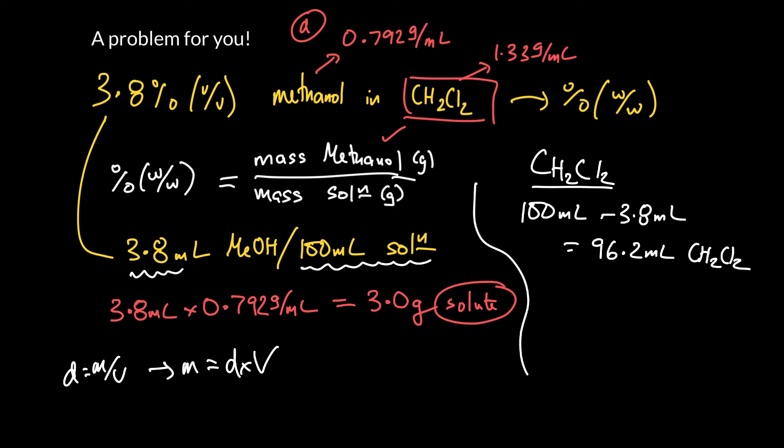So 100 minus 3.8 is equal to 96.2 milliliters of CH2Cl2, or methylene chloride. We want to turn it into a mass. So again, like down here, mass is density times volume. So the mass of methylene chloride is the density, 1.33 grams per ml, times the volume, 96.2 mls. The mls cancel out, we're left with grams, and I get 127.9, or 128 grams.